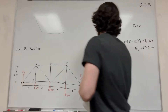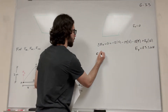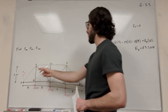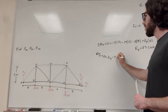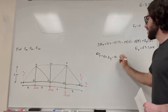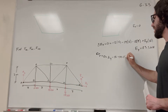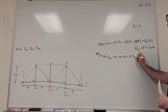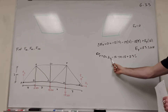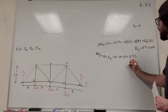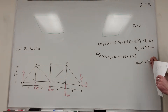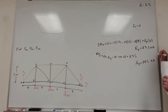Now we can easily find A of Y. Taking the sum of the forces in the Y direction equal to zero: A of Y minus 12 minus 14 minus 18 plus E of Y (23.5) equals zero. Solving, A of Y is equal to 20.5 kilonewtons. These are two important numbers that are going to help us solve the problem.